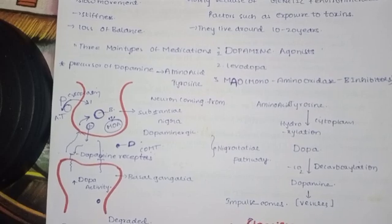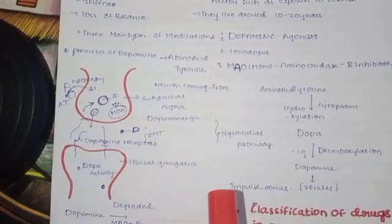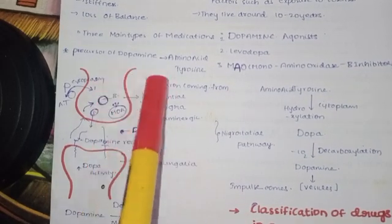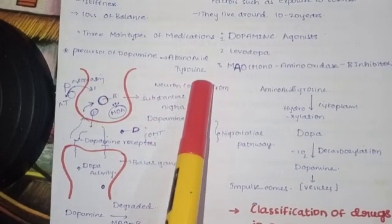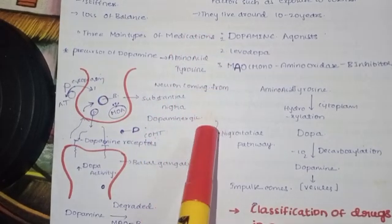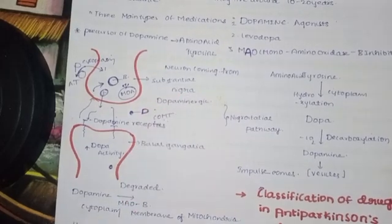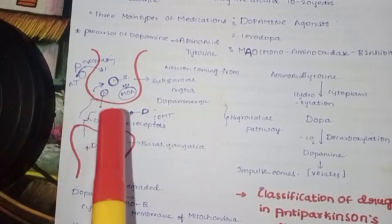Dopamine is the amino acid tyrosine. Now for the mechanism of action — I have to show a picture in the video.